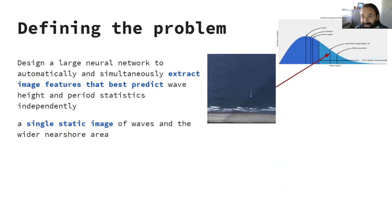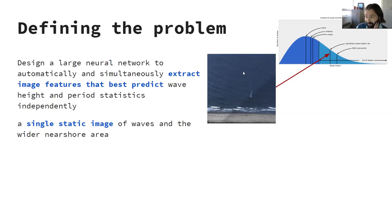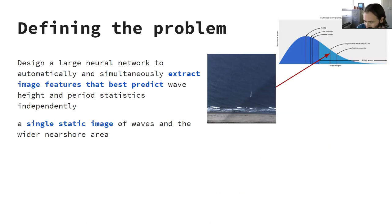I want to design a neural network that will automatically and simultaneously extract the features that best predict wave height and period from a single image. I'm interested in the application of this model to estimate an operational quantity such as significant wave height — the average of the top third of waves — but using the whole image to estimate that quantity, even though that quantity might be varying over the image in time. I want to use the entire image for my prediction, combining that time series of images with a coincident and co-located instrumental wave record.